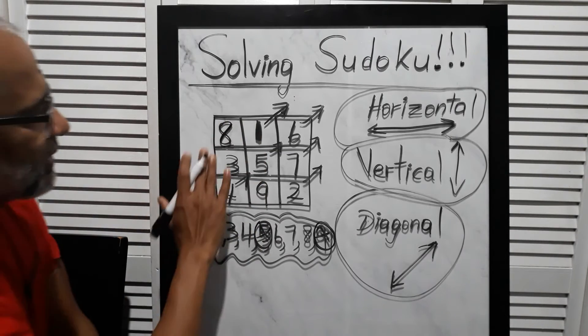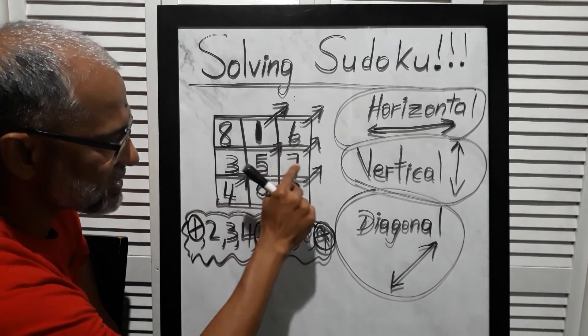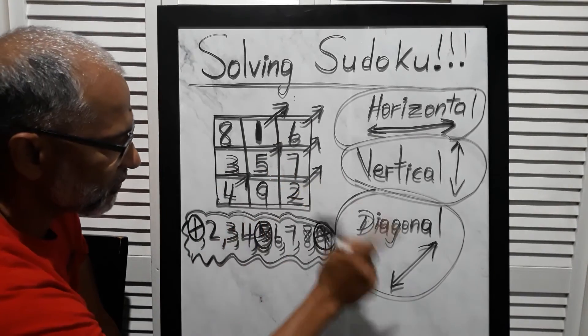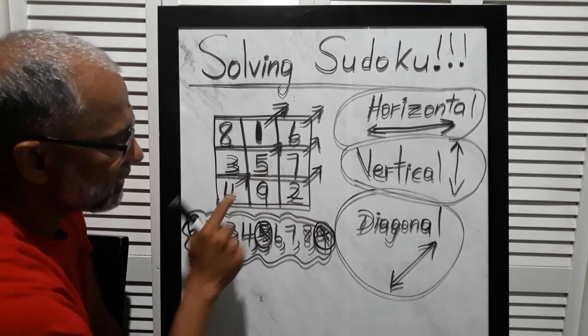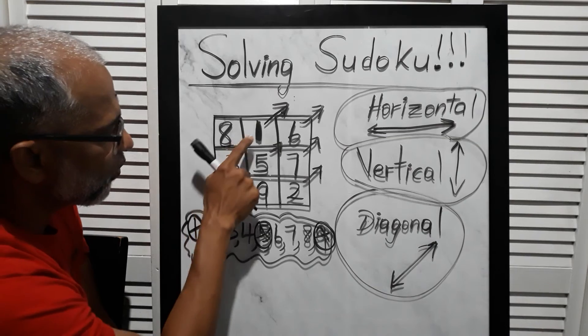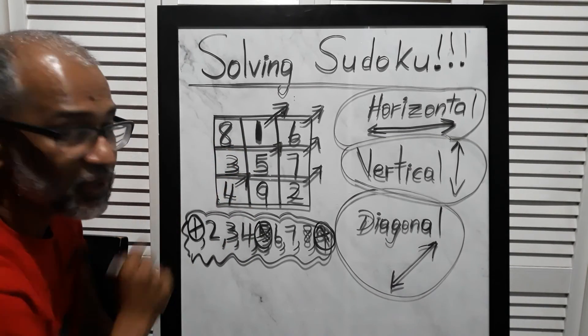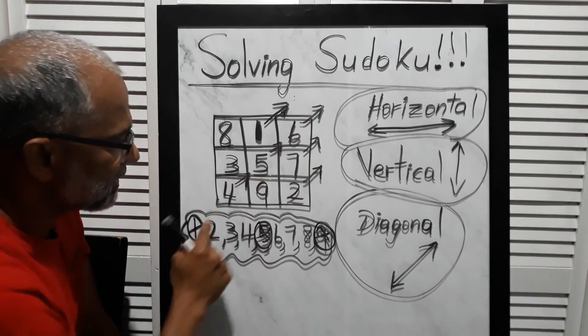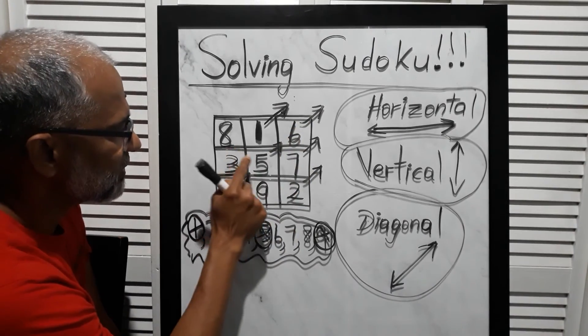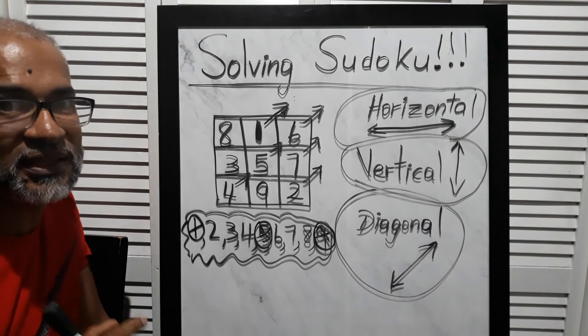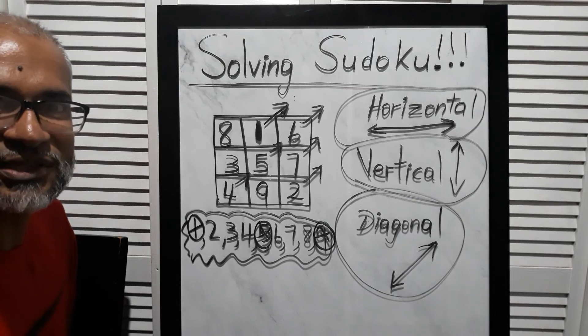If you add it up: eight plus one plus six is fifteen, three plus five plus seven is fifteen, four plus nine plus two is fifteen. Vertically: six plus seven plus two is fifteen, one plus five plus nine is fifteen, eight plus three plus four is fifteen. Diagonally: four plus five plus six is fifteen, two plus five plus eight is fifteen. So hope you guys got it. Thank you for watching.